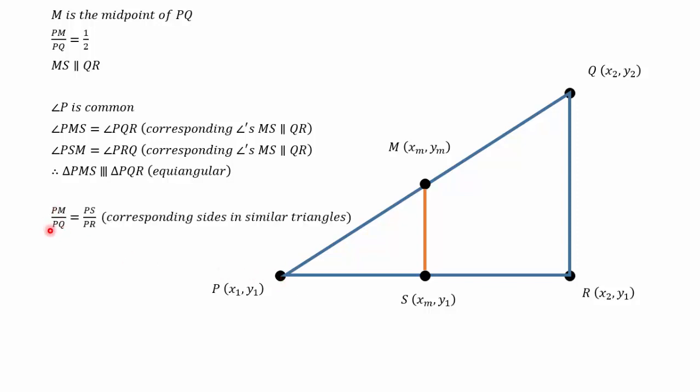So PM to PQ, a side of the small triangle to a side of the big triangle, should be equal to PS to PR, which is also a corresponding side of the small triangle to a corresponding side of the larger triangle. Now, PM to PQ we know from up here is the ratio 1 or is the fraction 1 over 2 because M is the midpoint of PQ.